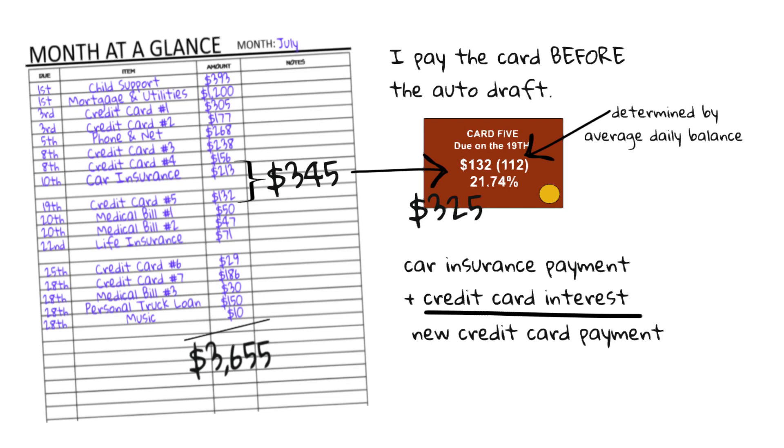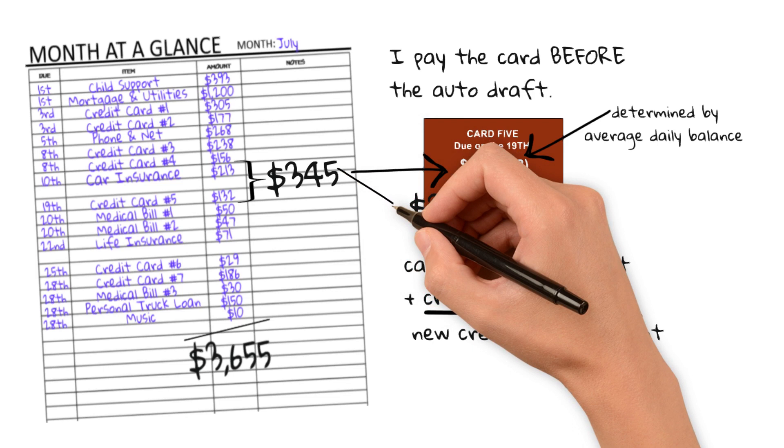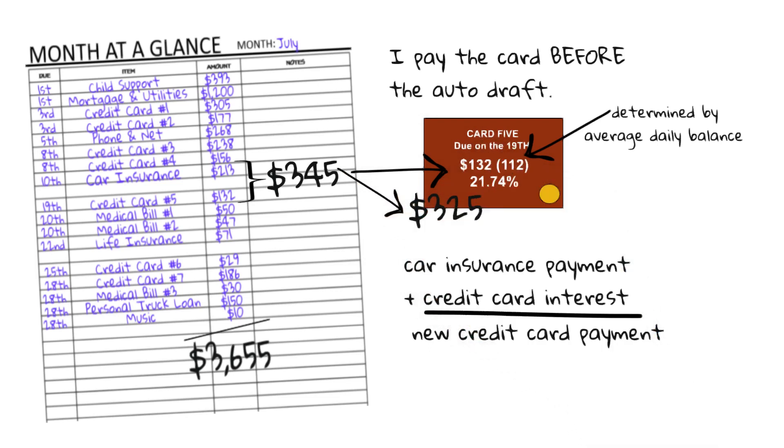And so this is not like a huge cash flow difference, but any kind of change that you can make like this makes a difference. And so I've gone from a $345 need for the individual car insurance and the credit card to $325.